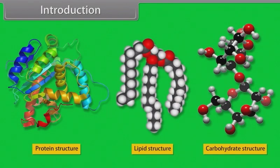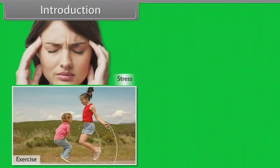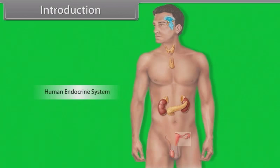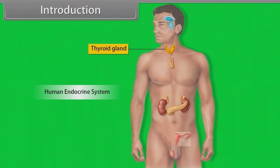Growth hormone has significant effect on the metabolism of protein, lipid and carbohydrates. The production of growth hormone depends upon many factors such as stress, exercise, nutrition, sleep etc. There are several other hormones secreted within the body which perform specific functions, such as calcitonin, which is secreted by the thyroid gland and helps in regulating the level of calcium in blood. Throughout this module we learn about chemical coordination and integration.